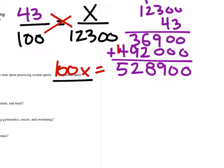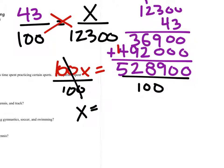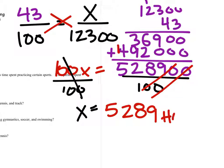And to solve this, we'll divide both sides by 100, which cancels out our 100s, leaving the x by itself, which is what we wanted. And that would be 5,289, because our zeros cancel out there. That would be hours if we wanted to be really picky.